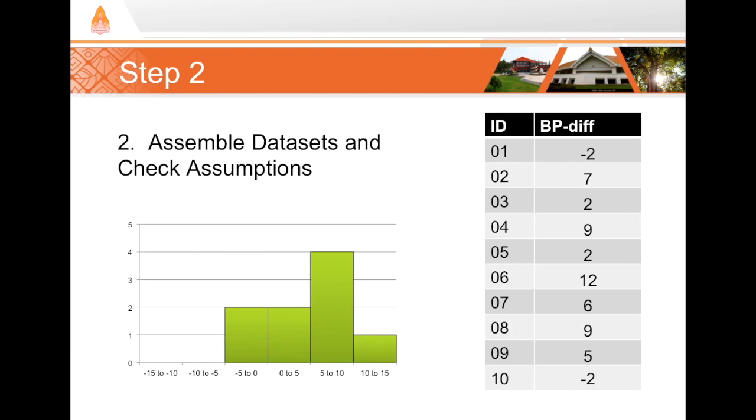We don't need to check the two original data sets, the set of before and after blood pressures, because in fact it is possible that those two data sets could be non-normally distributed and then produce a beautifully normally distributed differences data set. It is possible, and so we're only concerned with the differences data set. If I look here it does look close enough. If we weren't sure we could check using the quantitative measures.